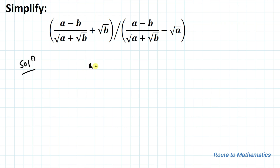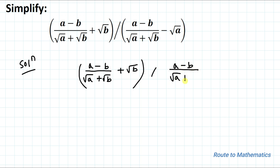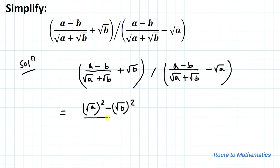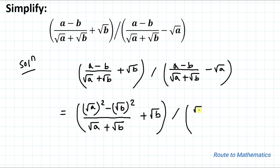The given expression is (a minus b) divided by (root a plus root b), plus root b, whole divided by (a minus b) divided by (root a plus root b), minus root a. In the next step we can rewrite 'a' as (root a) squared minus (root b) squared, divided by (root a plus root b), whole divided by similarly the second part as (root a) squared minus (root b) squared, divided by (root a plus root b), minus root a.